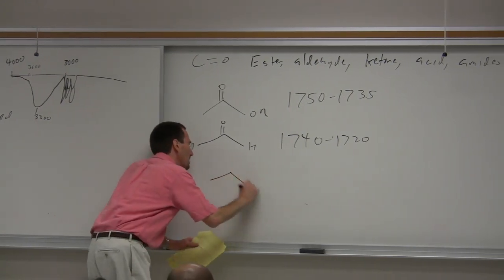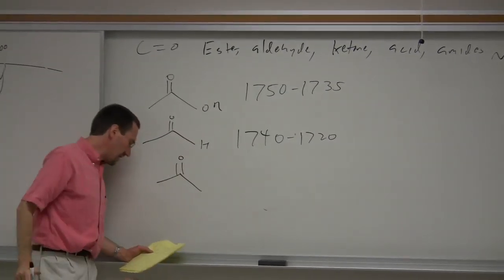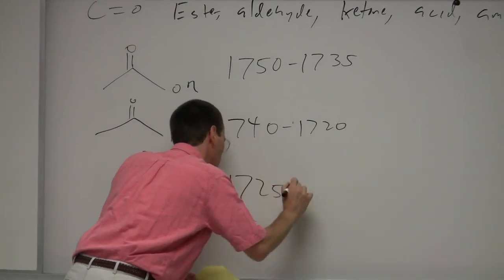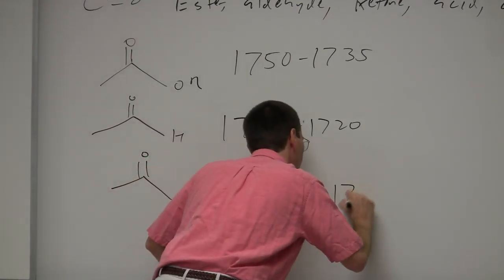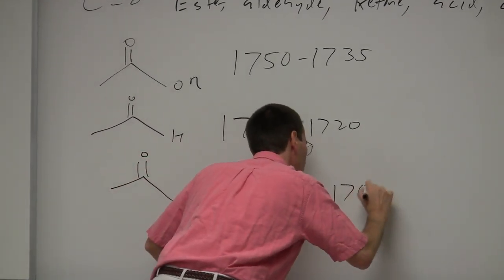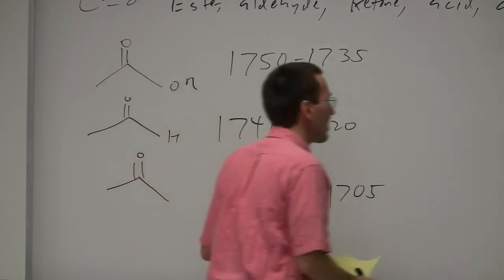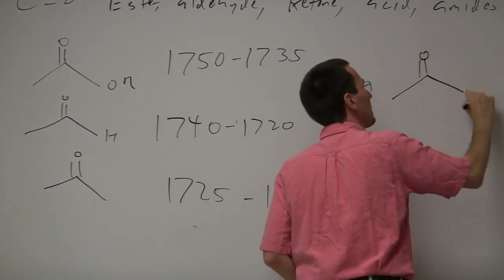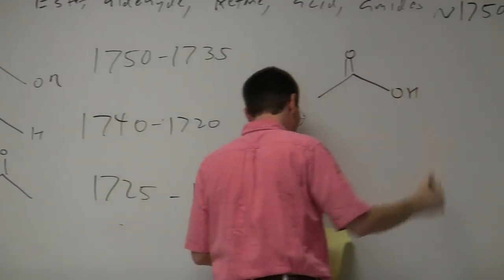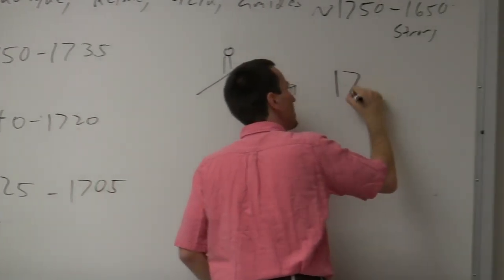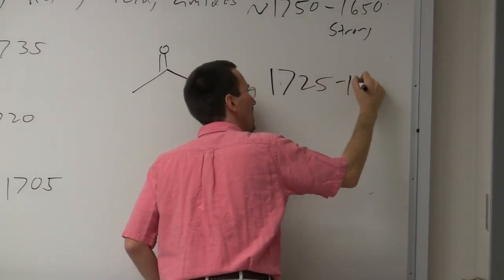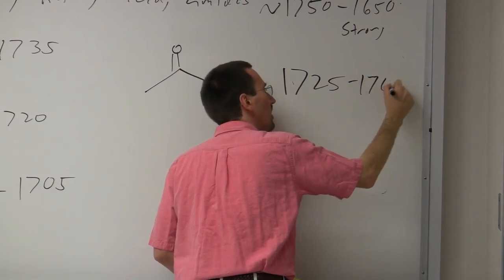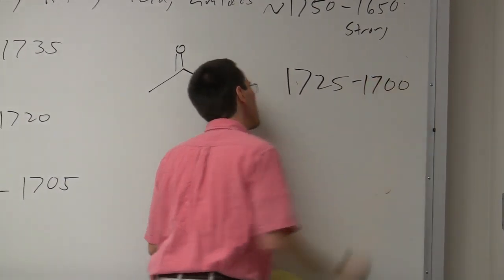A plain, normal ketone is typically about 1,725 to 1,705 wavenumbers. A carboxylic acid, without any conjugation or anything special, is about 1,725 to 1,700 cm⁻¹.